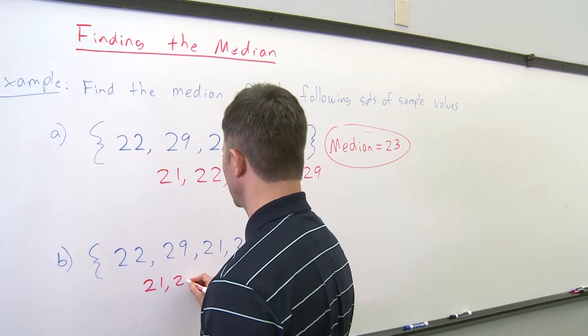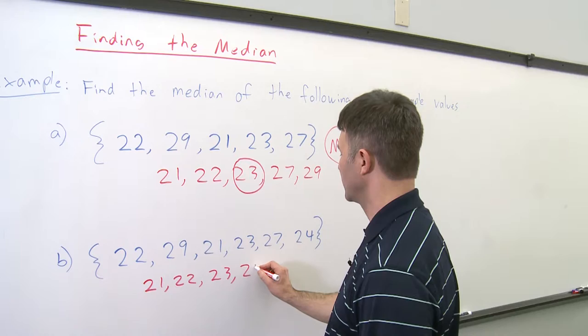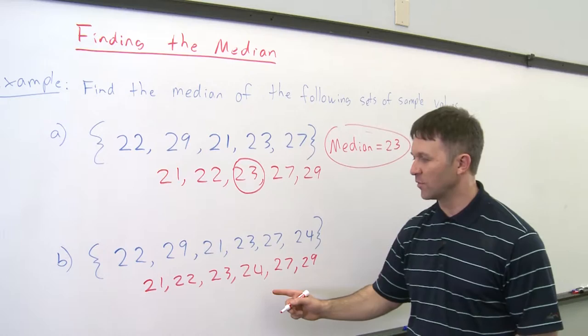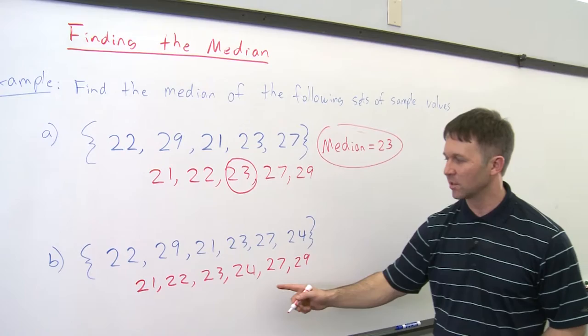So let's list them. We have 21, 22, 23, 24, 27, and 29. Okay, so we listed the values in order of increasing magnitude.